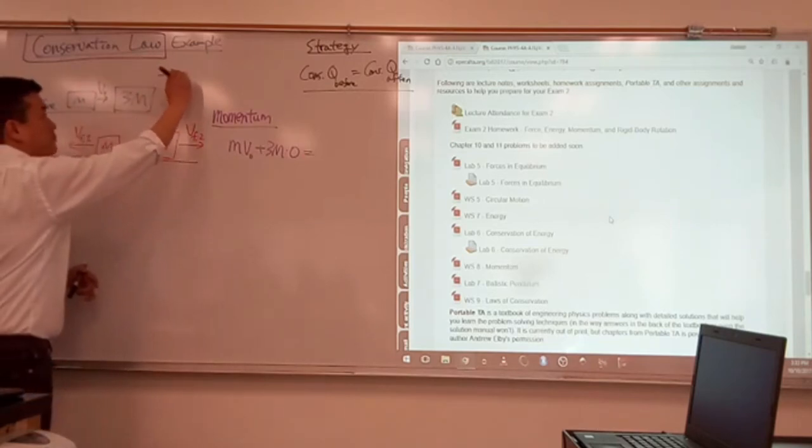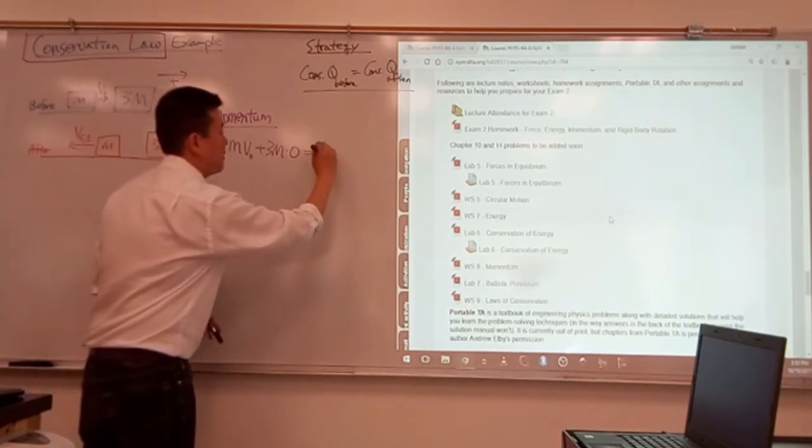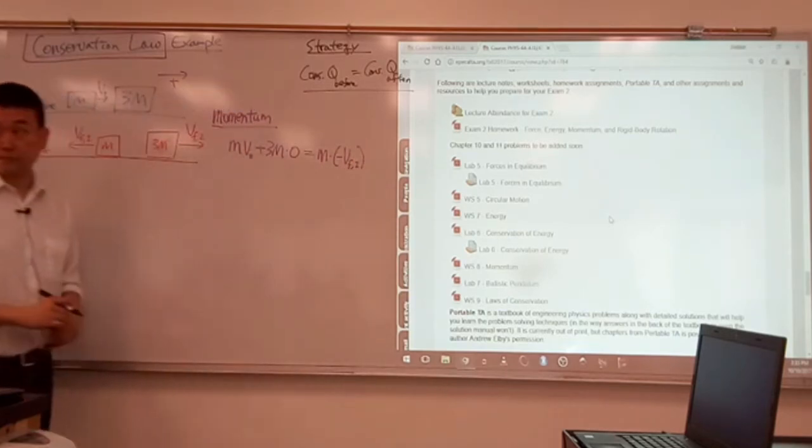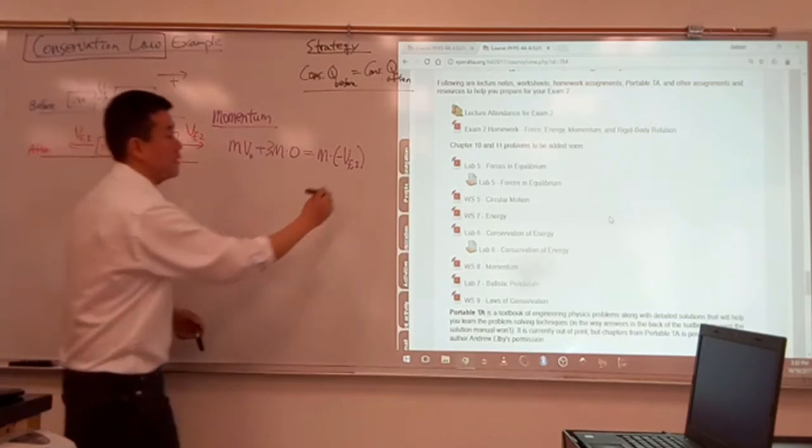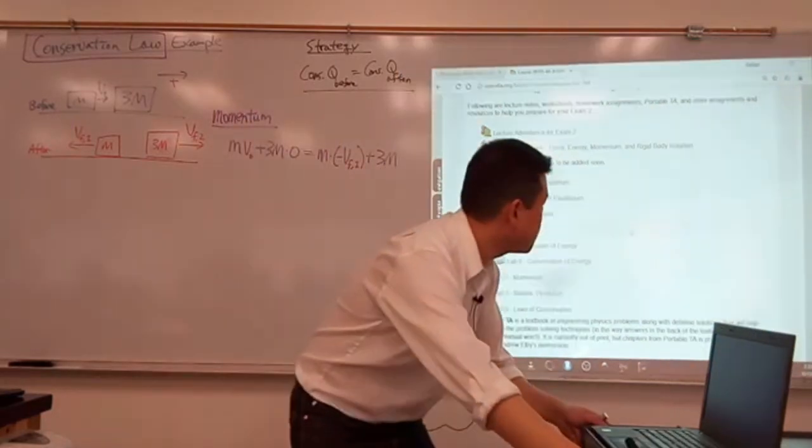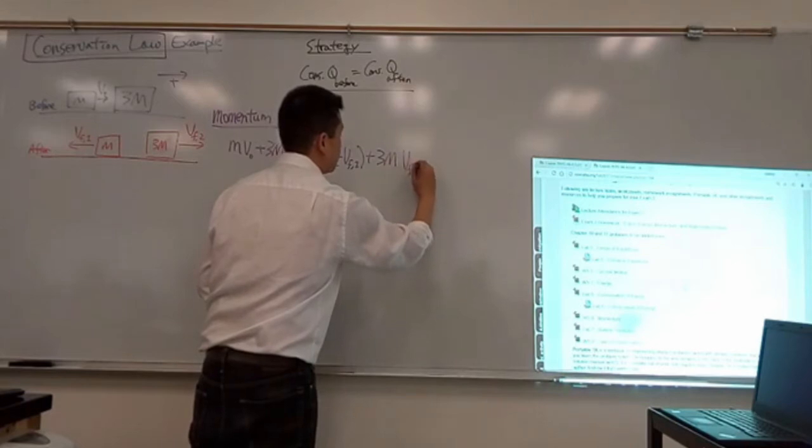We can say that's equal to momentum after the collision. Let me say rightward is positive. So it's 3m, let me write it in order. So it's mass times this velocity, so it'll be mass times minus v final one, right? That's equal to mass times this velocity, plus 3m v final two.